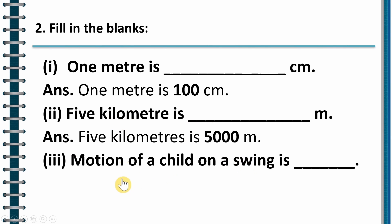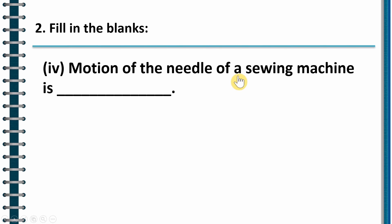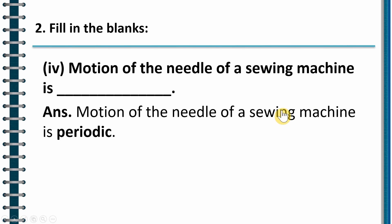Next question: Motion of a child on a swing is what? It is going to and fro. That's why it is periodic motion. So the answer is periodic. Fourth question: Motion of the needle of a sewing machine. This is also periodic. Why? Because that also goes to and fro. So motion of the needle on a sewing machine is periodic.